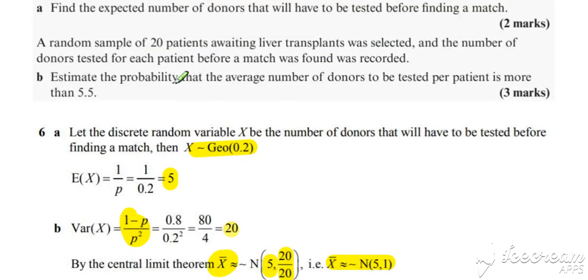Part B is potentially a confusing question. I think the key is, when you're asked the probability, it's to estimate the probability that the average number of donors to be tested per patient is more than 5.5.